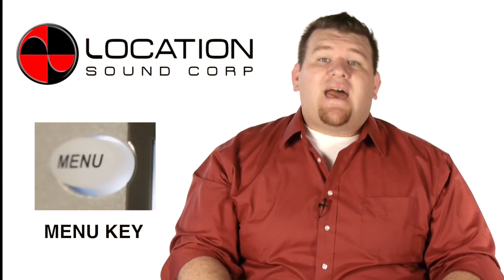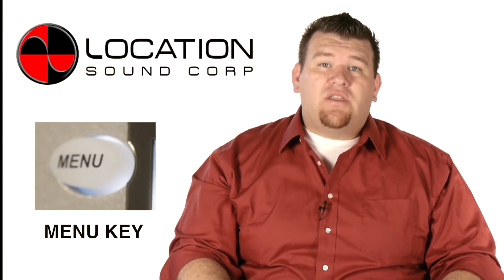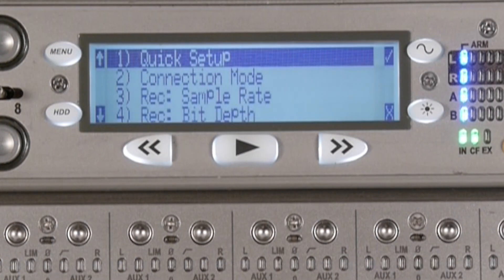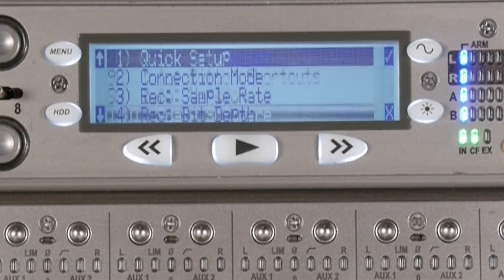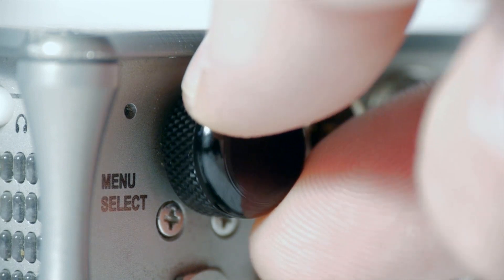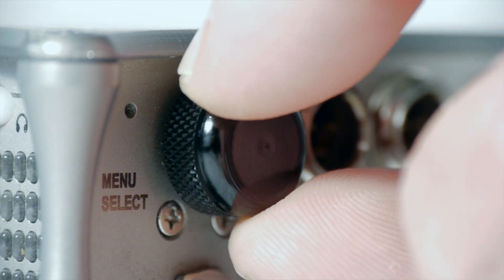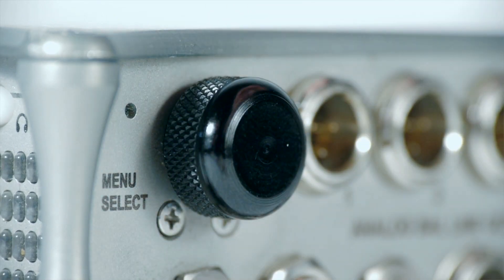The menu key accesses the 788T setup menu. When in the setup menu, you can scroll through menus using the multi-function rotary knob moving between menu selections. To select or enter data, simply push in.